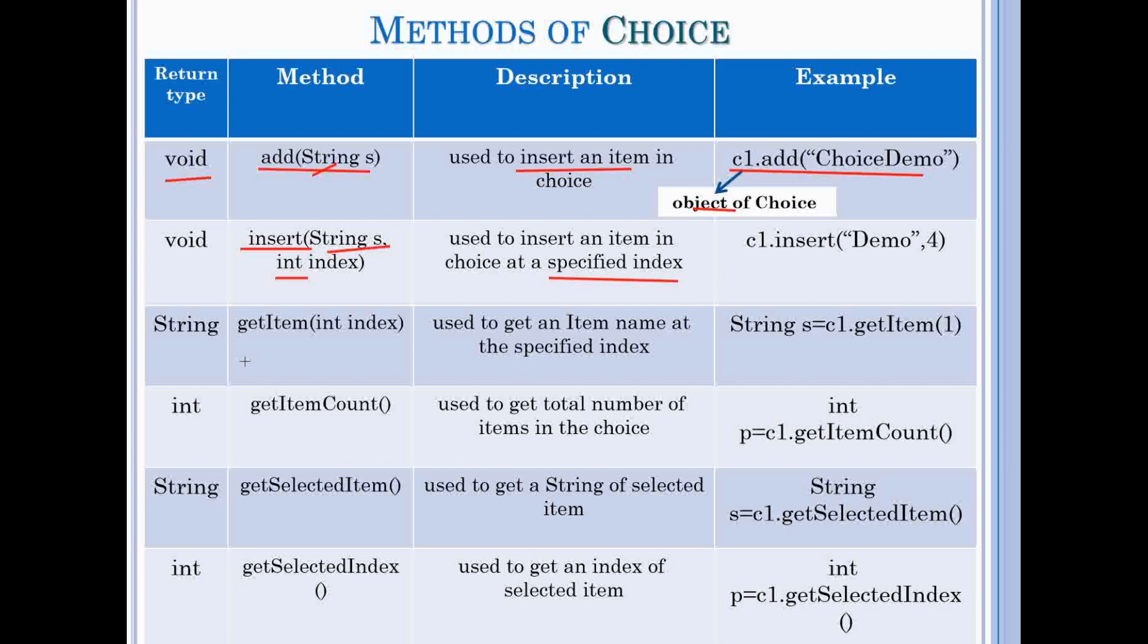Third is getItem with integer as a parameter and return string and this method is used to get an item name from the specific index. Here we store the result of method in a string object.